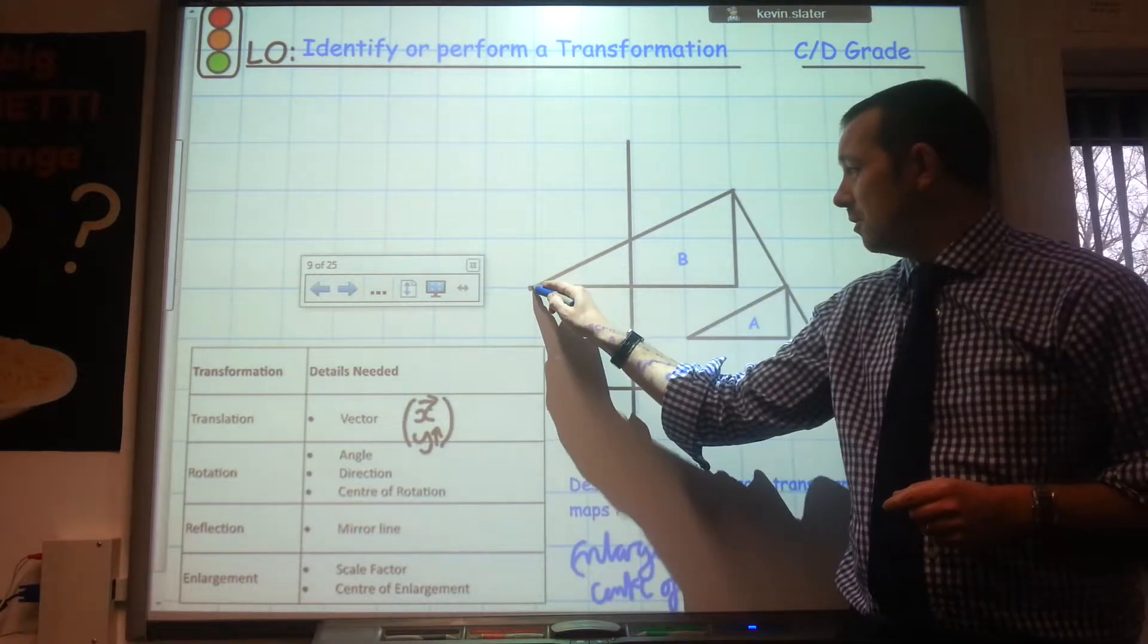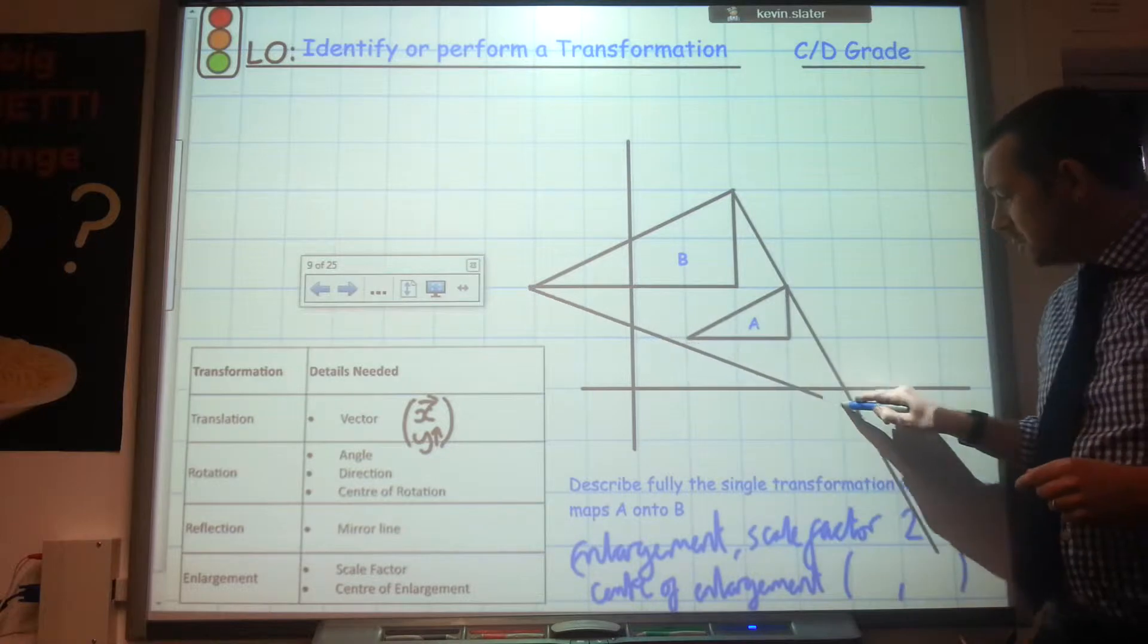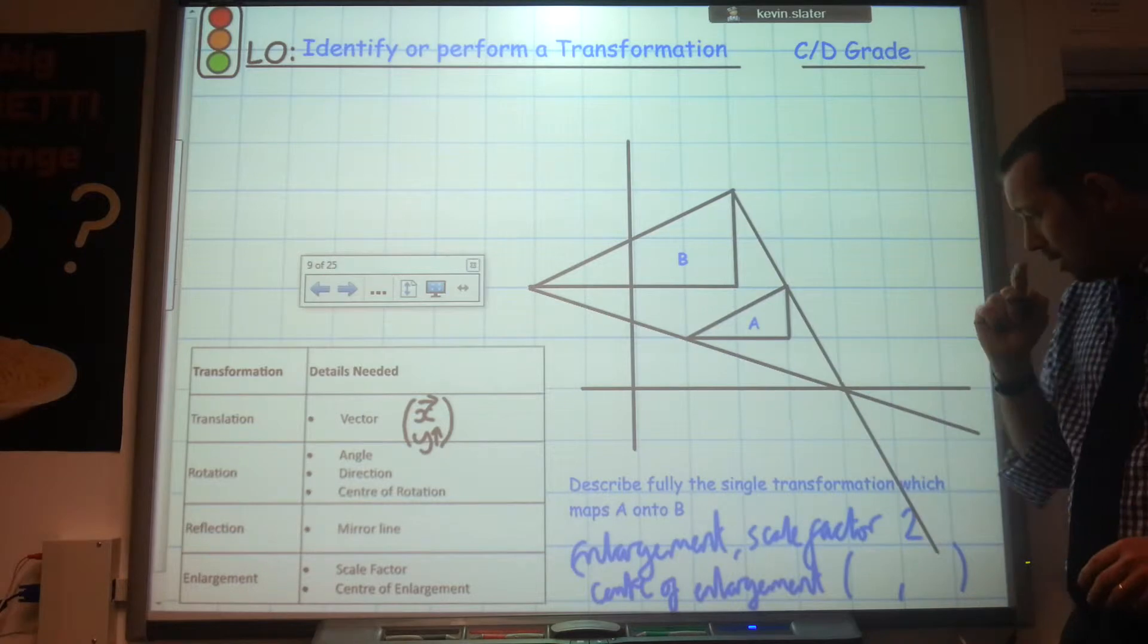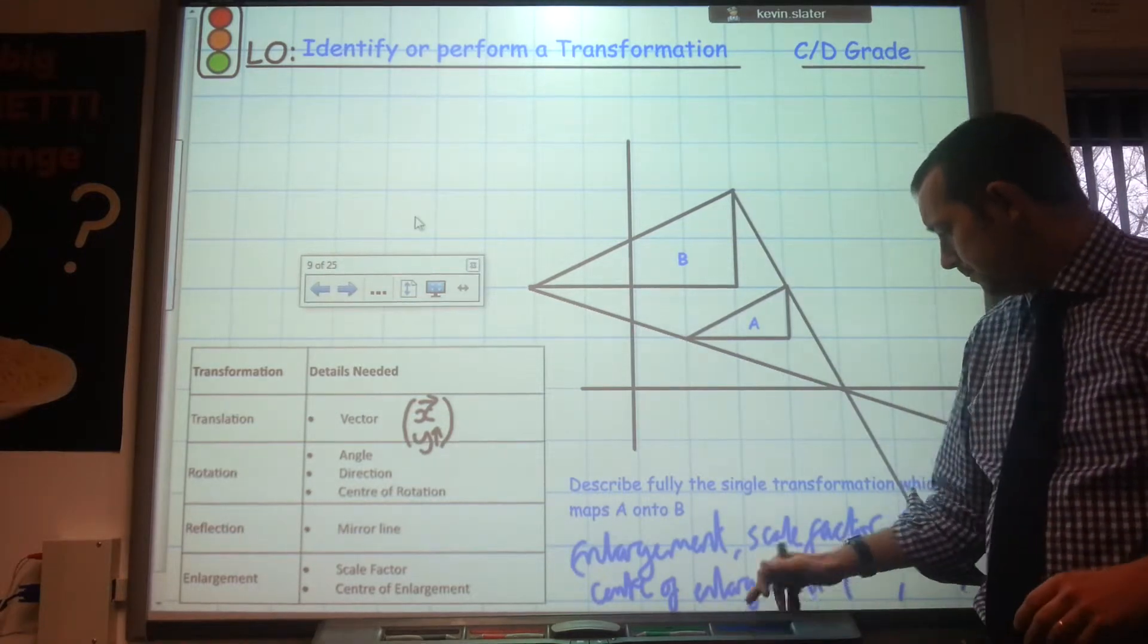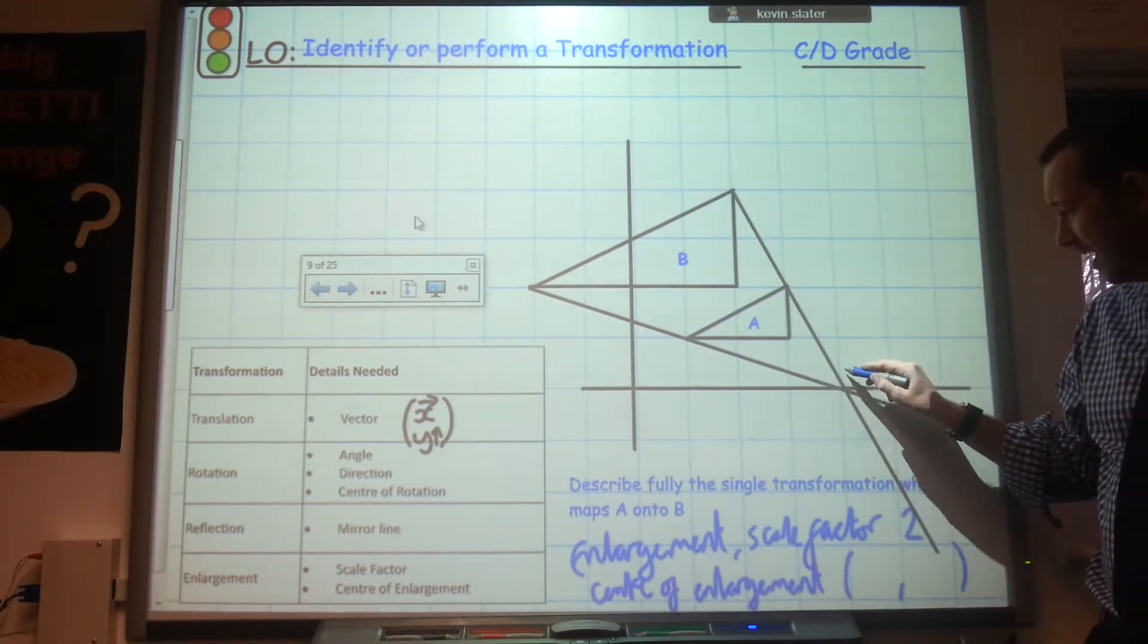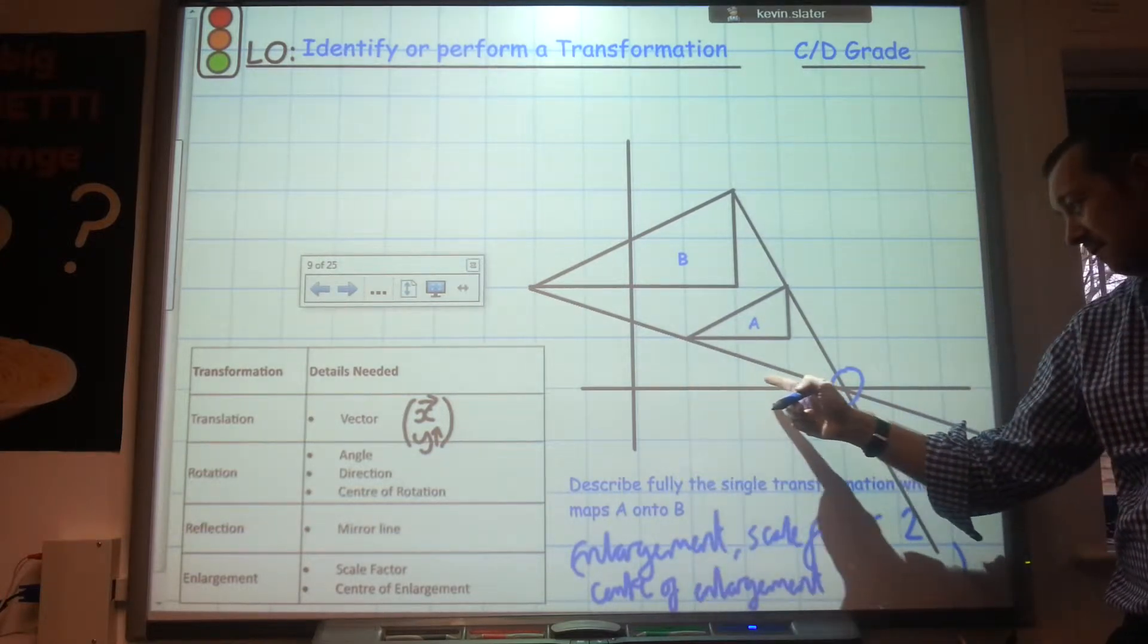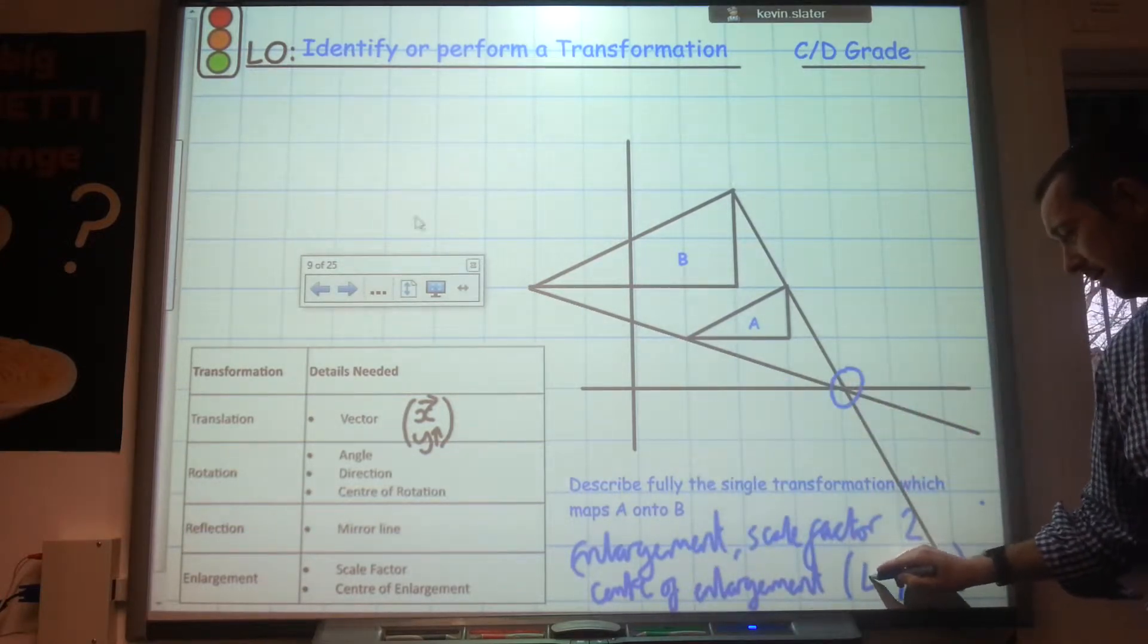I'm going to do the same with another corner. Join it to its original corner and carry the line on going. So straight lines there. Where the two lines meet, now that is my centre of enlargement. And the centre of enlargement there is at 4-0. So I'm going to write that there.